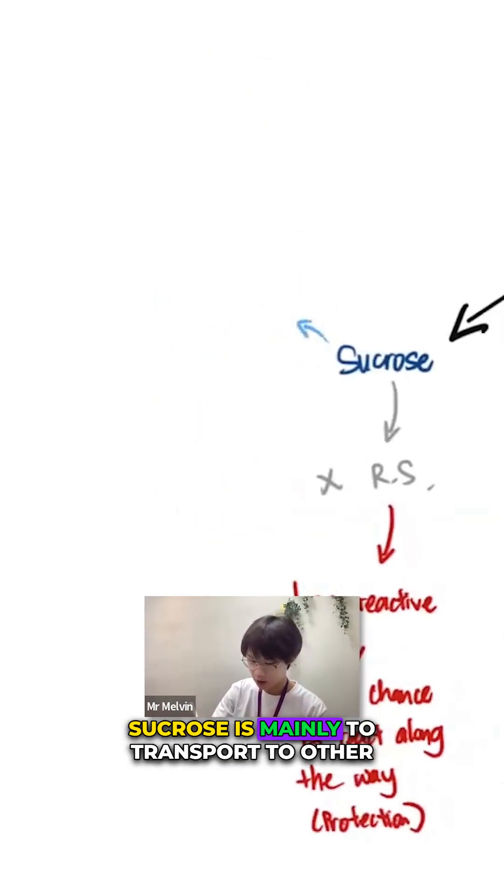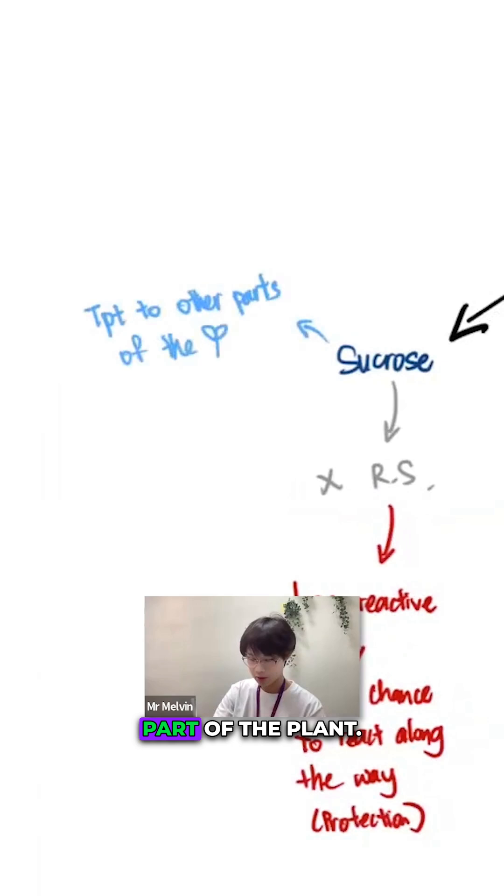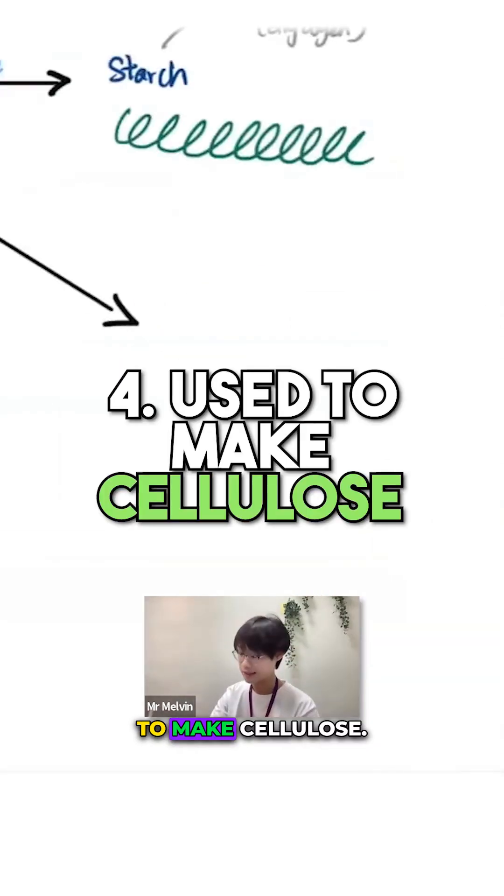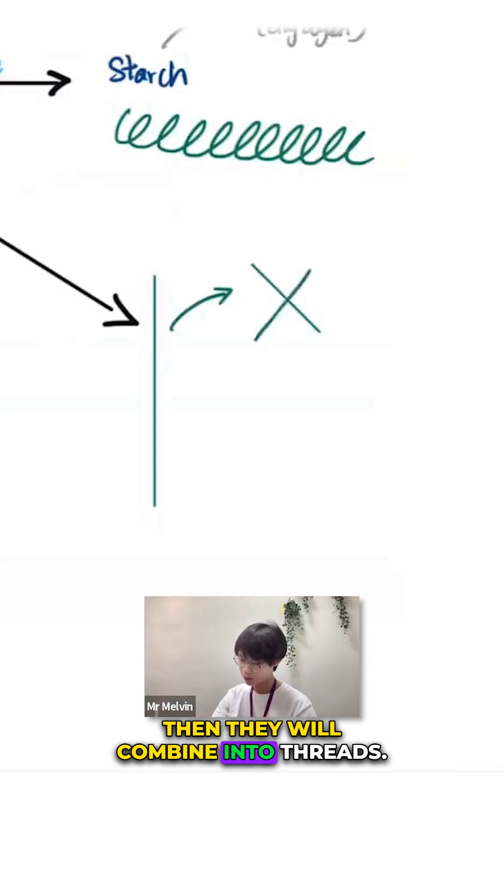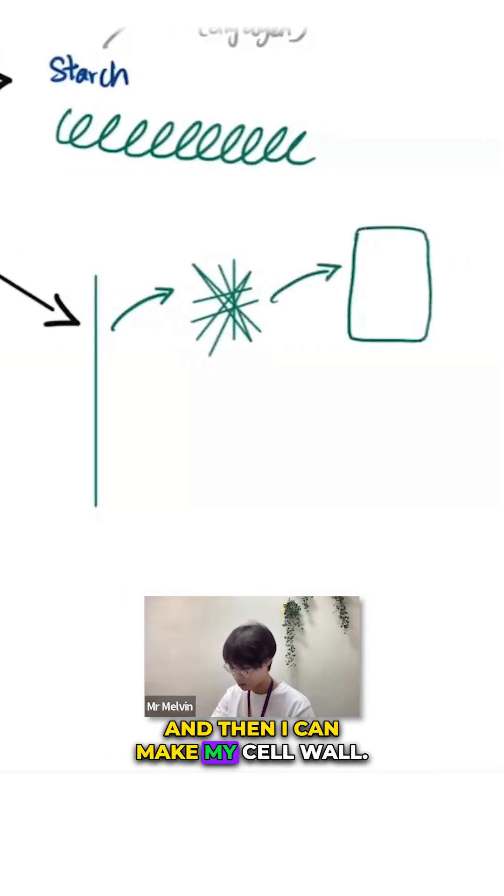Sucrose is mainly to transport to other parts of the plant to make cellulose. Long chains, then they are combined into threads, and then I can make my cell wall.